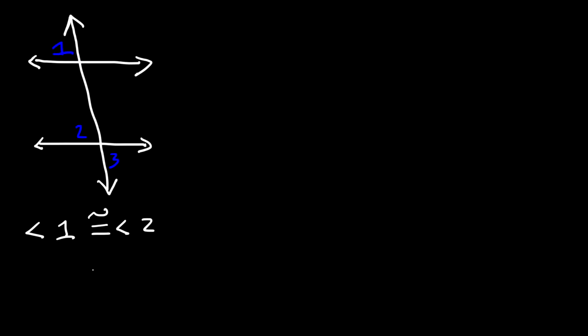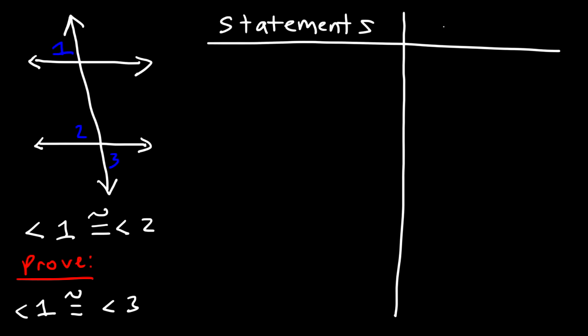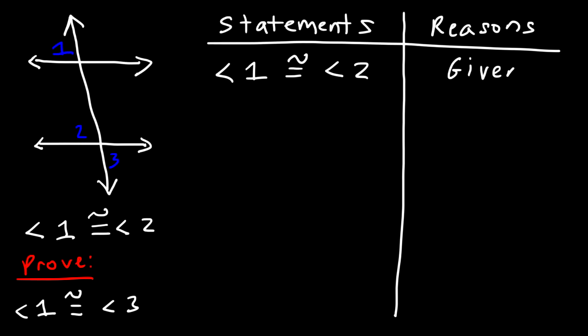In this video we're going to talk about two-column proofs as it relates to angles. Let's draw a picture first. We're going to say this is angle one, angle two, and angle three. We're given that angle one is congruent to angle two, and our task is to prove that angle one is congruent to angle three. In a two-column proof, the first column contains all of our statements and the second column contains the reasons. The first thing you want to write is what you're given: angle one is congruent to angle two.